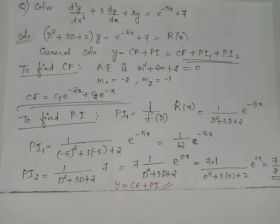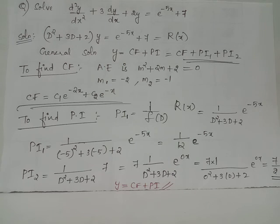Therefore, the general solution for this differential equation is: y = c1·e^(-2x) + c2·e^(-x) + e^(-5x)/12 + 7/2.